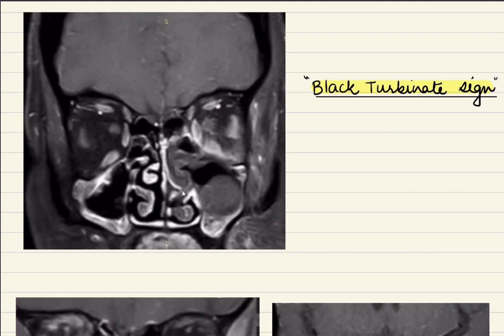Coming to this MRI, this is a contrast-enhanced MRI coronal section. As you can see, the turbinates on the left side are not taking up contrast. This is known as the black turbinate sign. This happens because this area has become necrosed, and devitalized tissue does not take up contrast. Getting this information is very important because when planning surgery or debridement, we have to debride all the necrosed area.